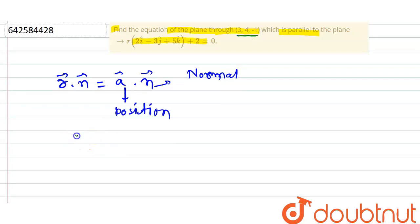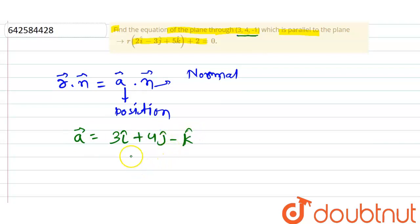Hence, the position vector is 3 î + 4 ĵ − k̂. Now we have to find vector n, and here we are given the equation of the plane which is parallel to this plane.